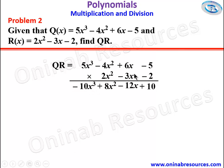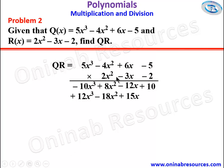We are done with negative 2. We go to negative 3x. Negative 3x multiplied by negative 5 gives positive 15x. Negative 3x multiplied by positive 6x gives negative 18x squared, placed under 8x squared. Negative 3x multiplied by negative 4x squared gives positive 12x cubed, placed under negative 10x cubed. Then negative 3x multiplied by positive 5x cubed gives negative 15x to the power 4. We are done with negative 3x.